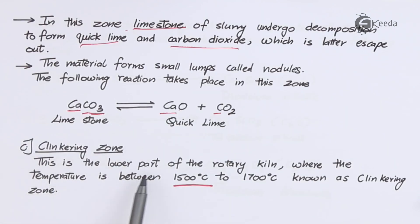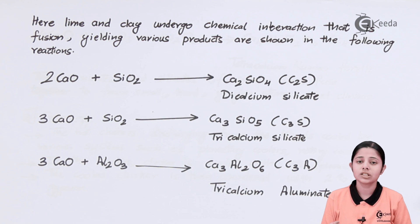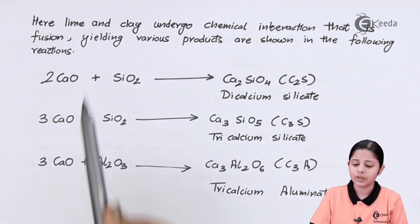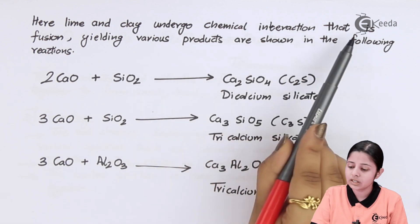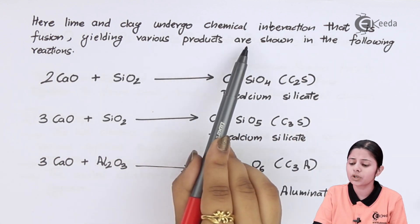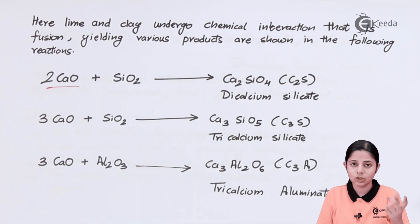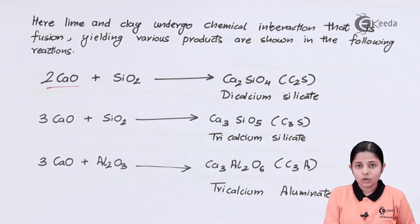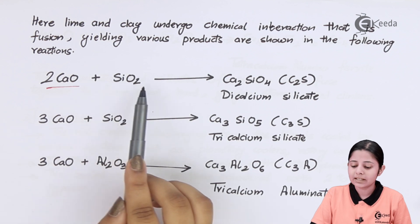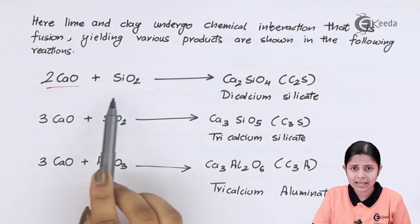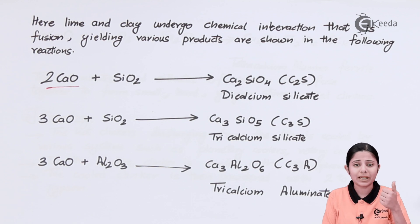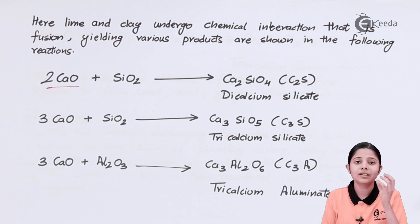The third zone is the clinkering zone — the lower part of the rotary kiln where the temperature is between 1500 to 1700°C. Many reactions take place in the clinkering zone. The quicklime (CaO) formed in the calcination zone undergoes chemical interactions with SiO2 and Al2O3, which are components of the clay and shale, leading to fusion and formation of various products.